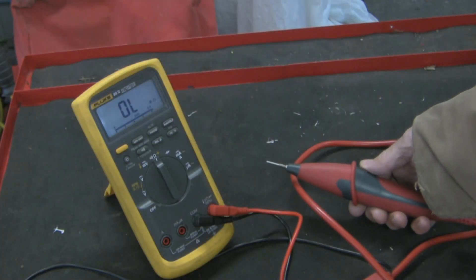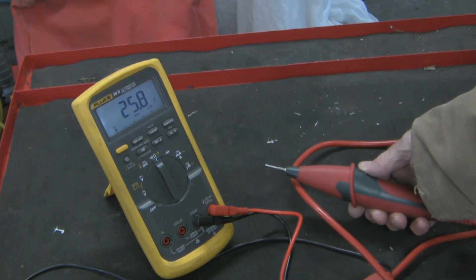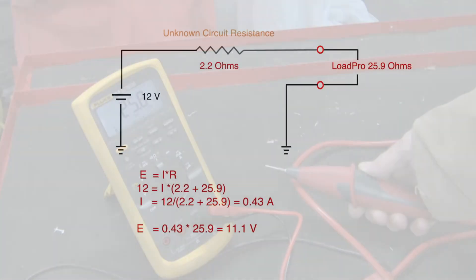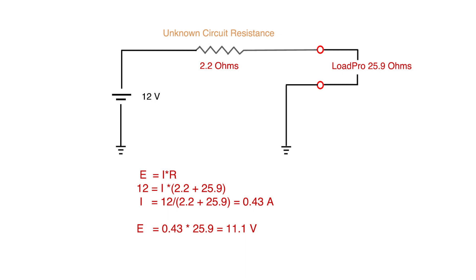Now let's take a minute and play devil's advocate. Would a Load Pro be any better? Here's what the same circuit would look like with a Load Pro with 25.9 ohms here. Let's assume for the moment you still have 2.2 ohms of circuit resistance here. So from Ohm's law current would be 0.43 amps and again from Ohm's law the drop across the Load Pro would be 11 volts or a drop of about 1 volt.